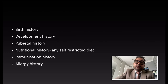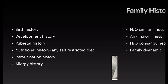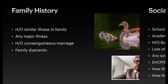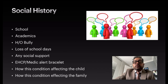Birth history, developmental history, and pubertal history should be taken briefly. For nutritional history, inquire about any salt-restricted diet or carbohydrate-rich diet. Immunization history and allergy history are equally important. Take a family history of similar illness, any history of glomerulonephritis in the family, vasculitis, or any major illness, including consanguineous marriage.